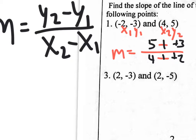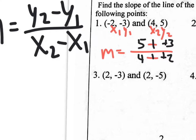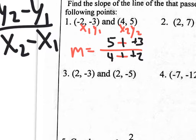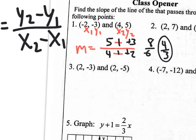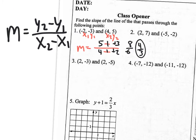On number one, you get an answer of 8 over 6, which reduces down to 4 over 3 — that's your slope. Sometimes you'll get 0 on top; you would say your slope is 0. Sometimes you get 0 underneath; you would say your slope is undefined. So you can try problems 2, 3, and 4.